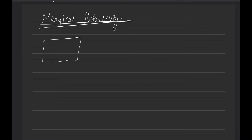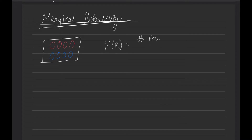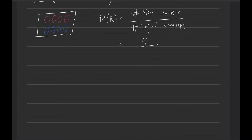We take the example of a box with four red balls and four blue balls. What is the probability that if you pick one ball it is a red ball? The probability is the number of favorable outcomes divided by the number of total outcomes. Here, favorable outcomes are four and total is eight, so that's 50 percent.